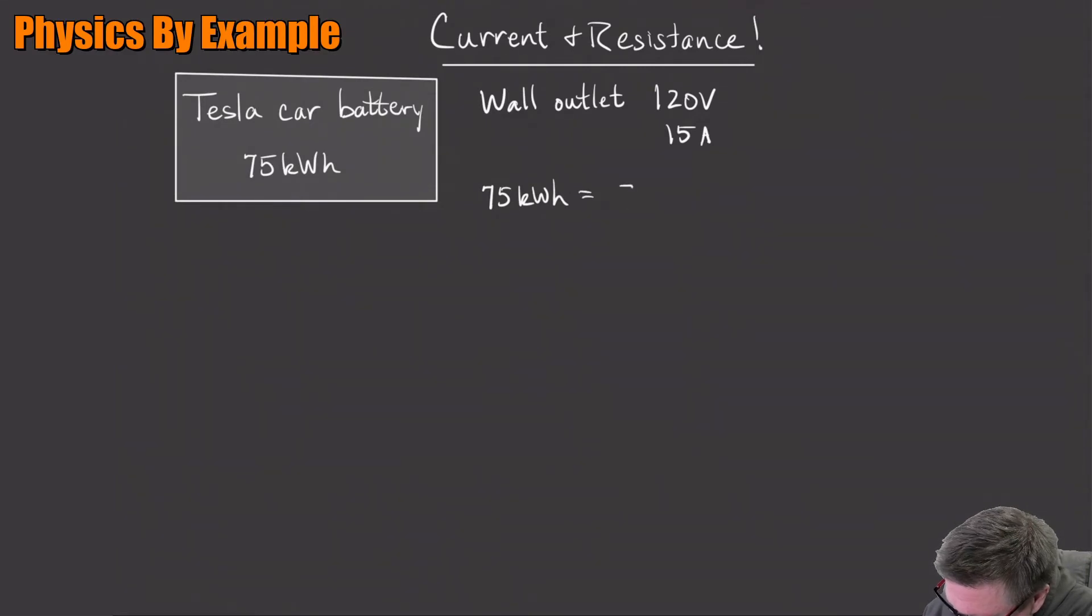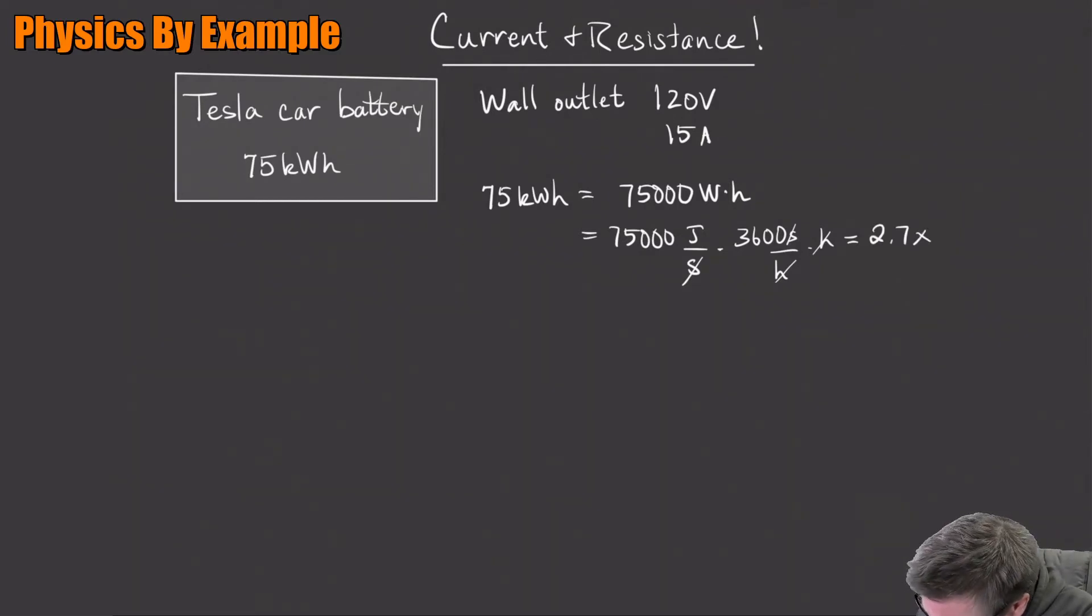Okay, 75 kilowatt hours - what is that? It's 75,000 watt hours. So that's going to be 75,000 joules per second times 3600 seconds per hour times the hour that we had there. Let's see, and I did this already and I got 2.7 times 10 to the 8 joules. Okay, so that car battery is going to store 270 megajoules.